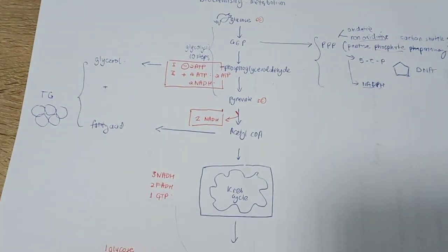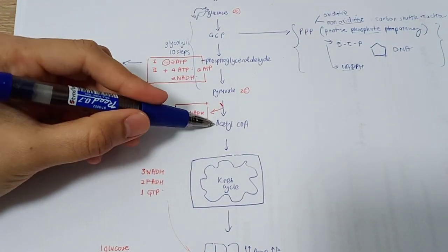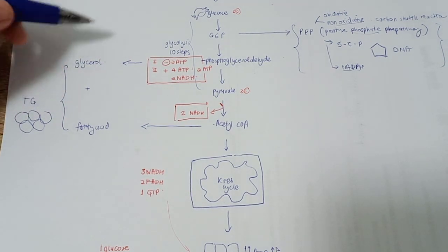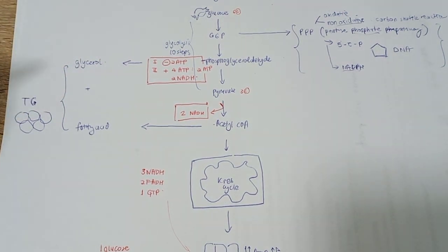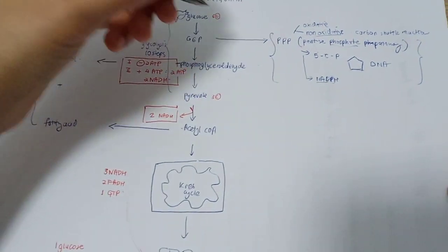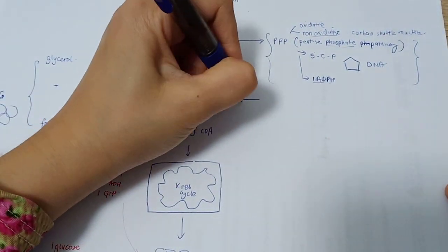If the ATP is enough, then the body will store the acetyl-CoA and also phosphoglycerol aldehyde in the form of triglyceride. The pyruvate actually can go—the fate of pyruvate varies.